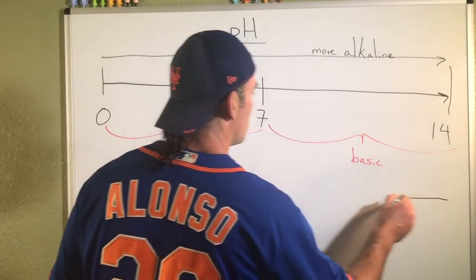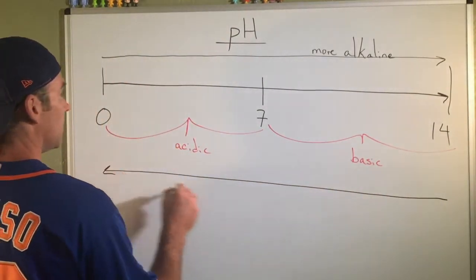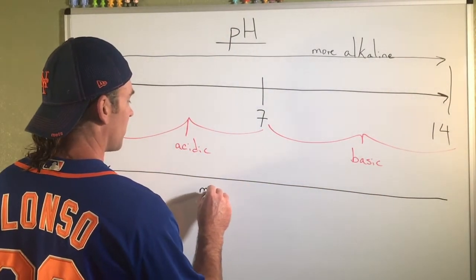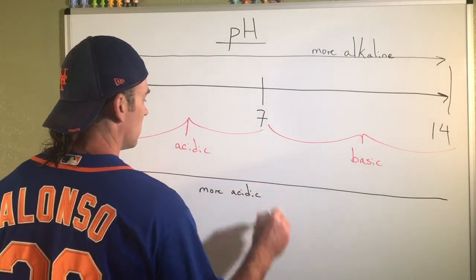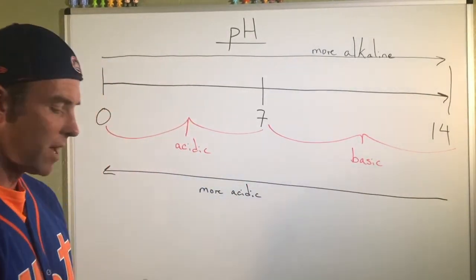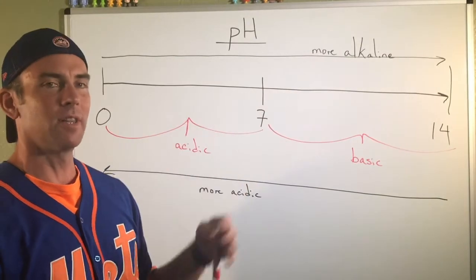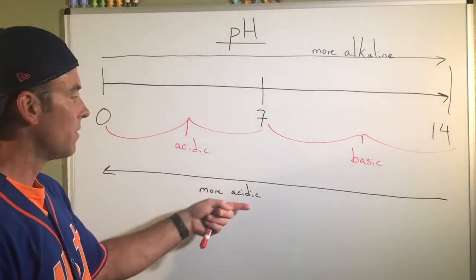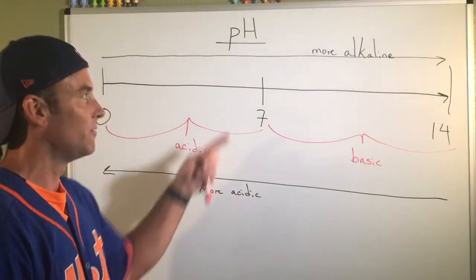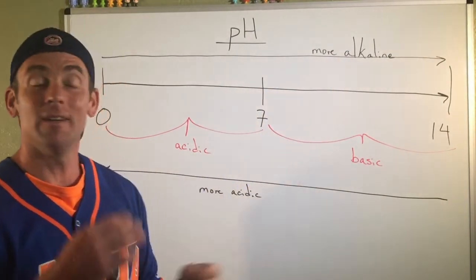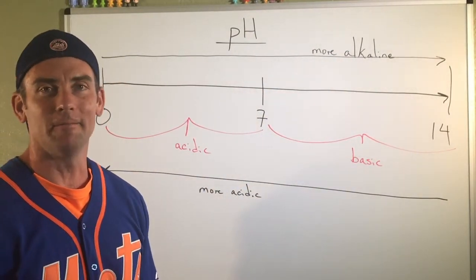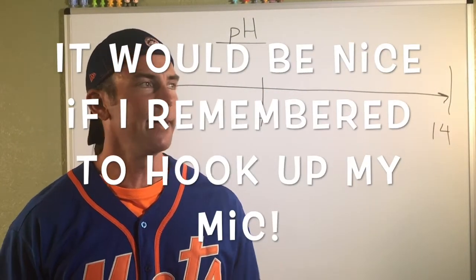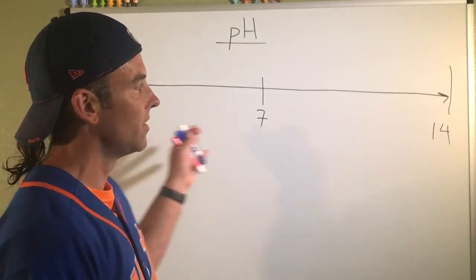More alkaline is going to be in that direction. And anytime you move in this direction on this number line, well, surprise, surprise, this is more acidic. And so make sure that if you see that alkaline word, that's what we're talking about. If you're more acidic, you're less alkaline. If you're more alkaline, you're less acidic. It's always that kind of yin and yang.